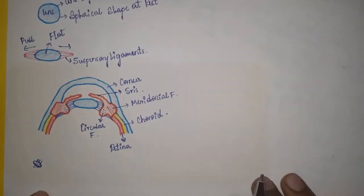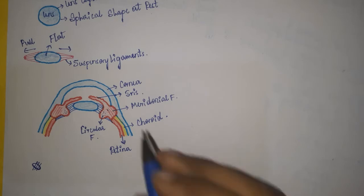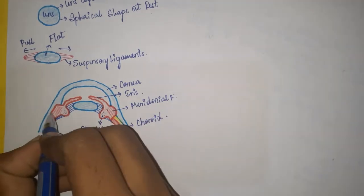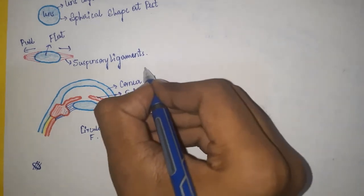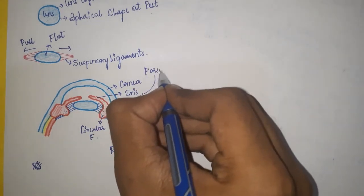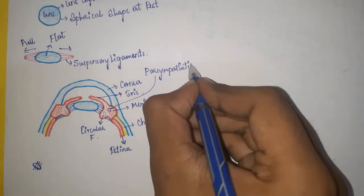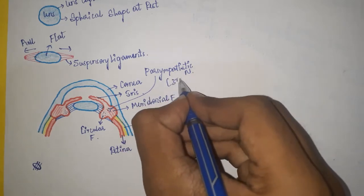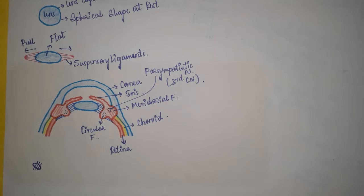The ciliary muscles are innervated by the parasympathetic nerve from the third cranial nerve. Sympathetic nerves also innervate, but their effect is too weak compared to parasympathetic innervation.